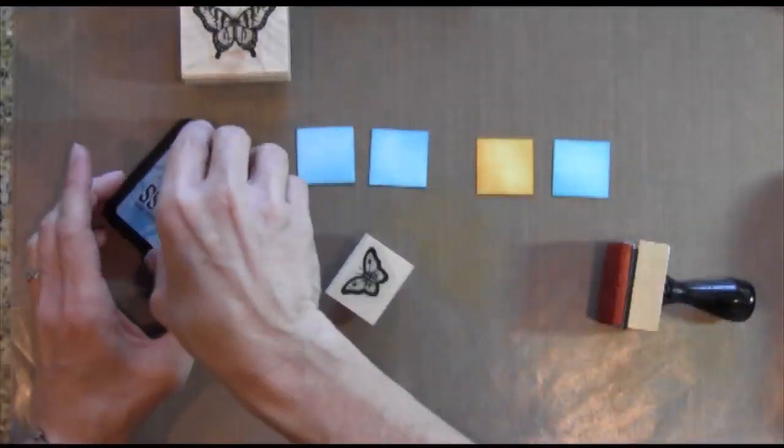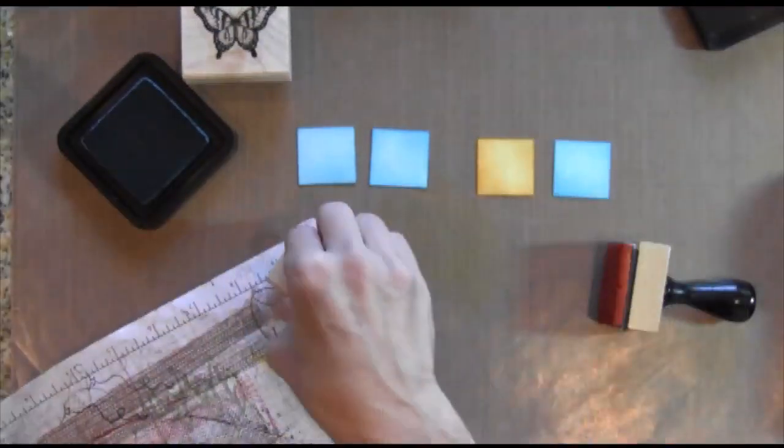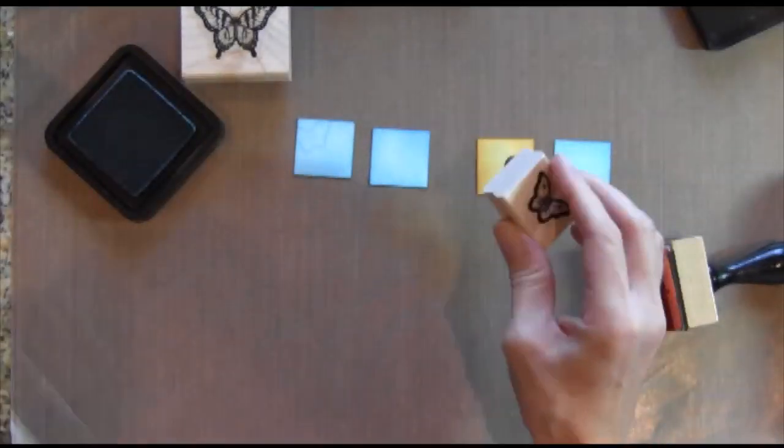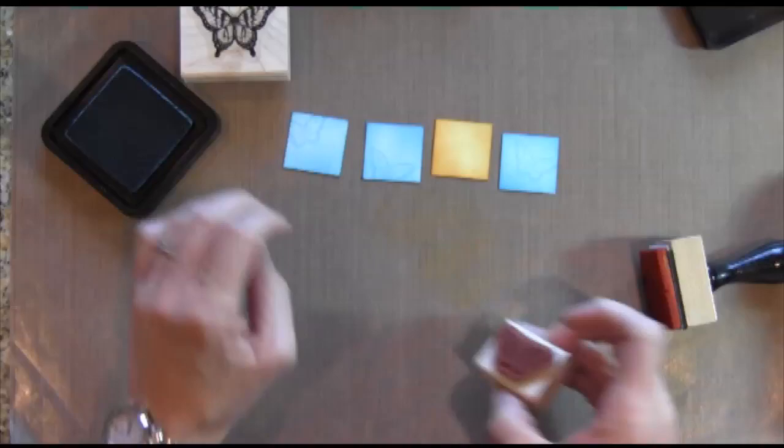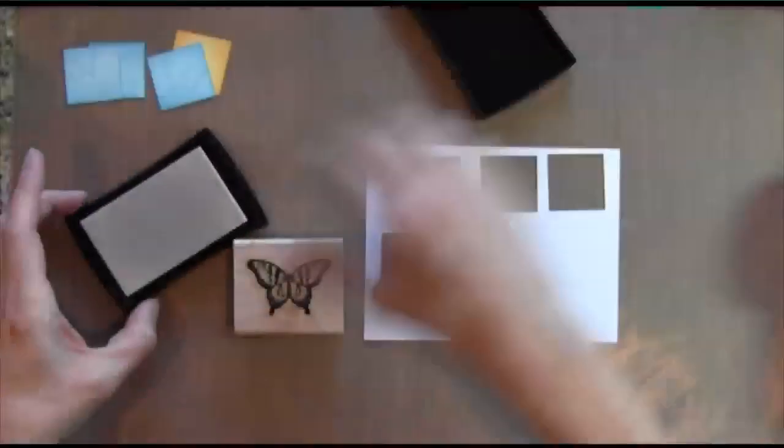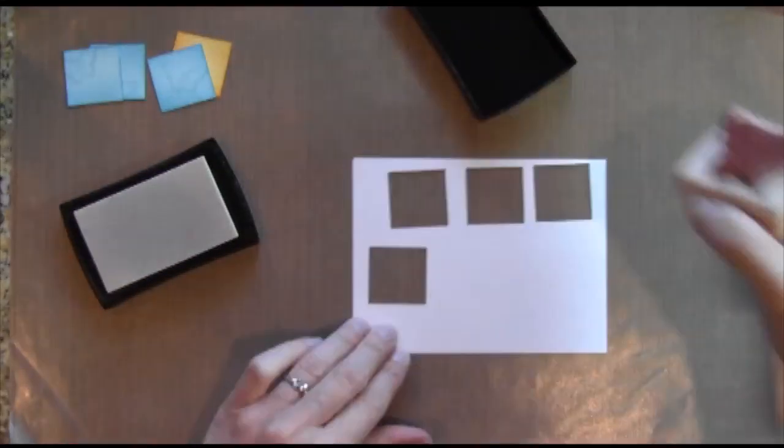And I'm using the Papillon Potpourri, I'm sorry, Potpourri Papillon, I think it is, a stamp set by Stampin' Up, and I'm using my broken china and I'm stamping off on a piece of paper so that I just kind of get a faded image there. So I'm using a tone on tone.